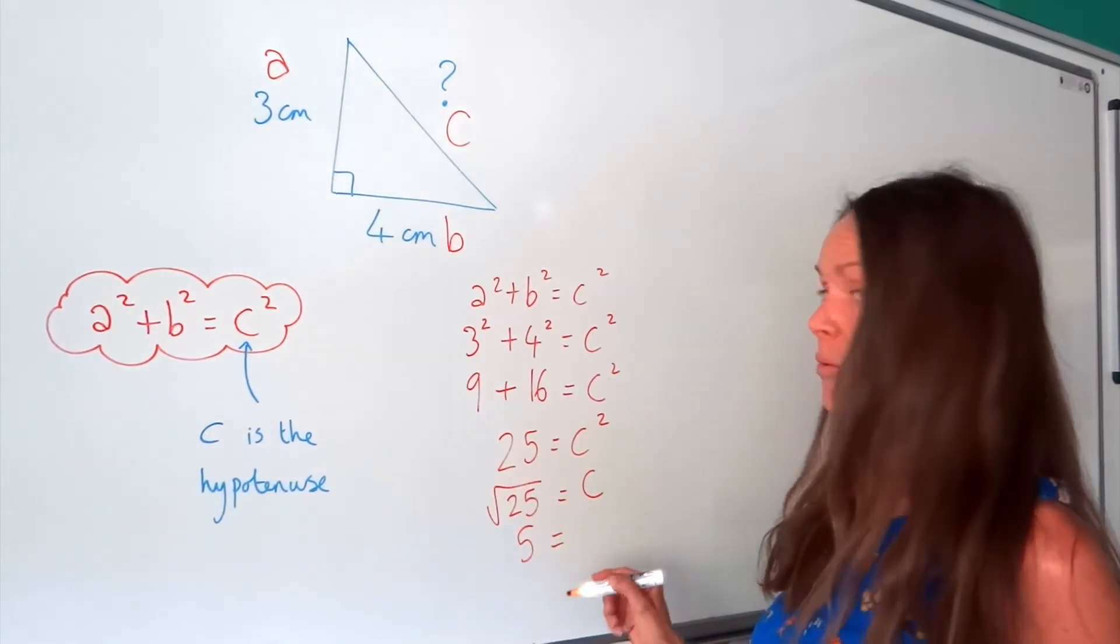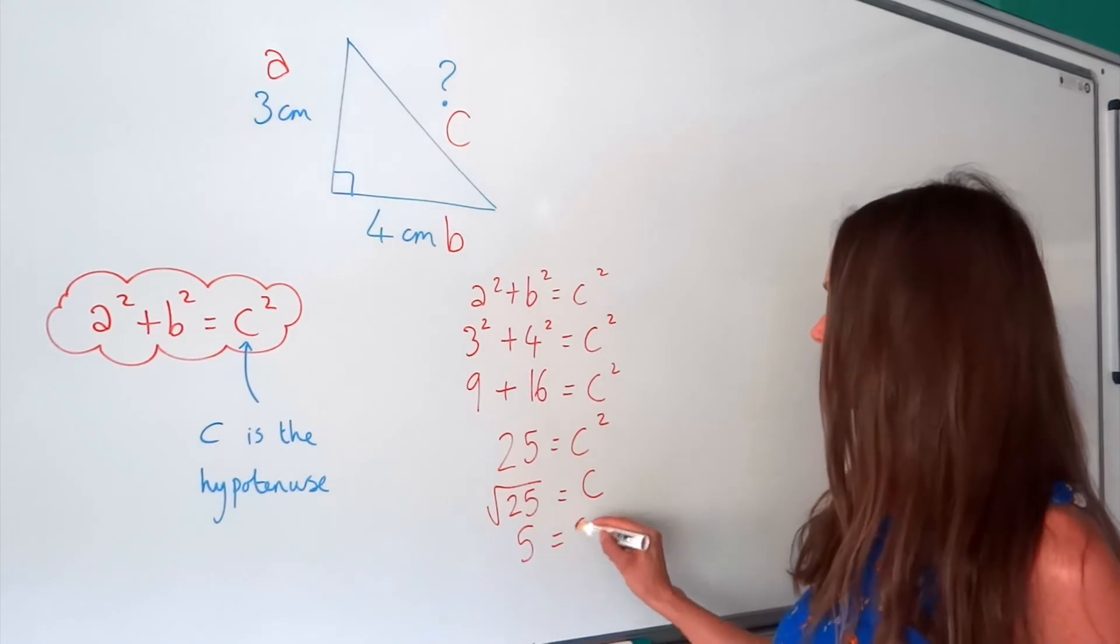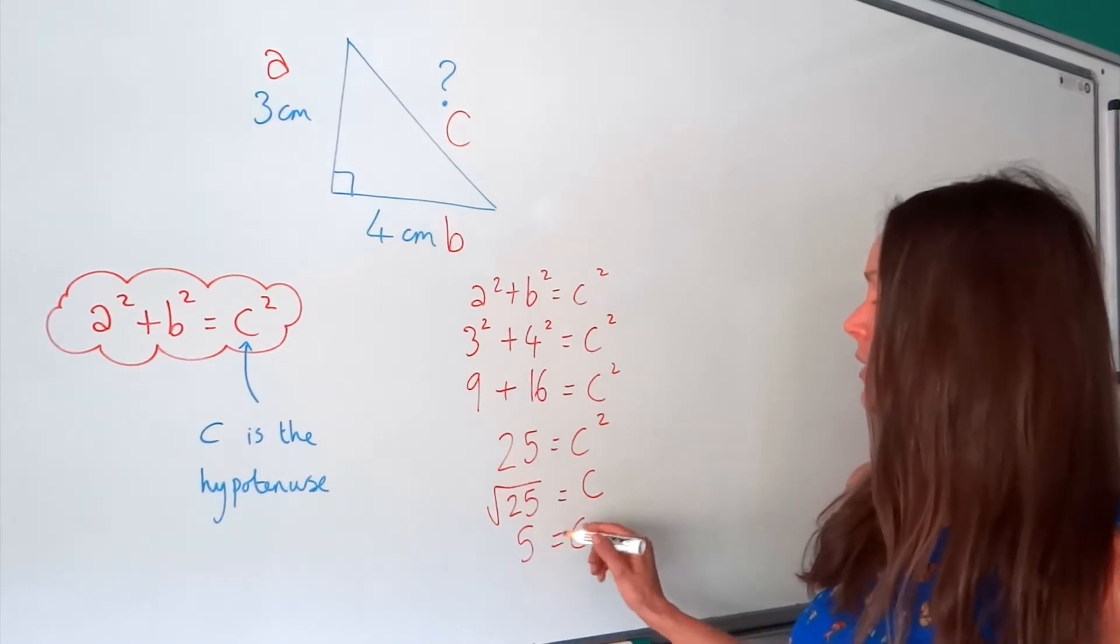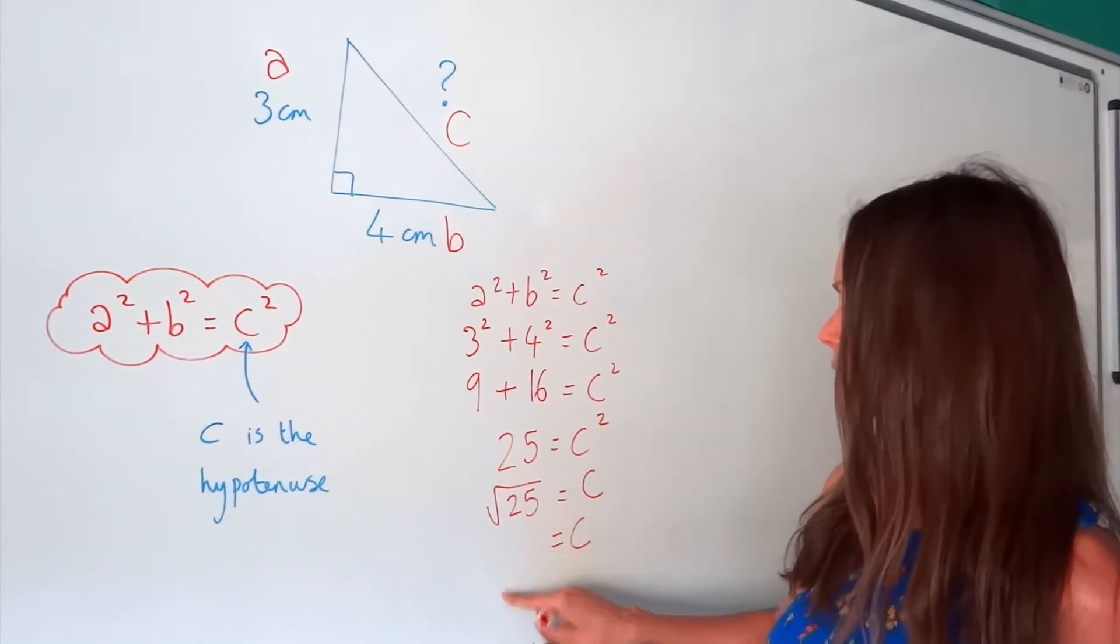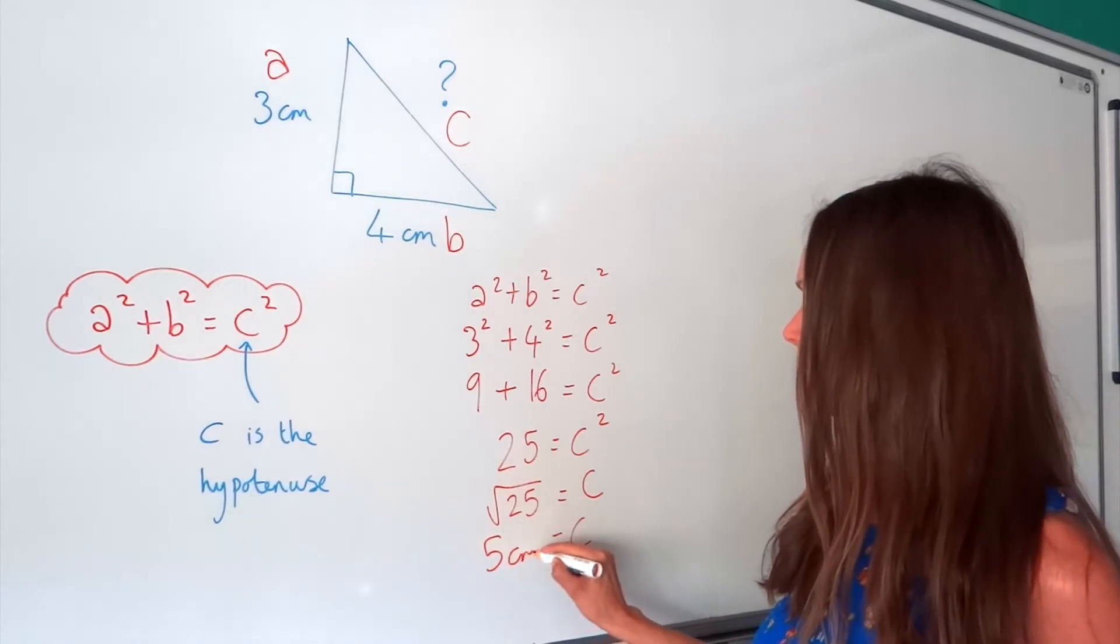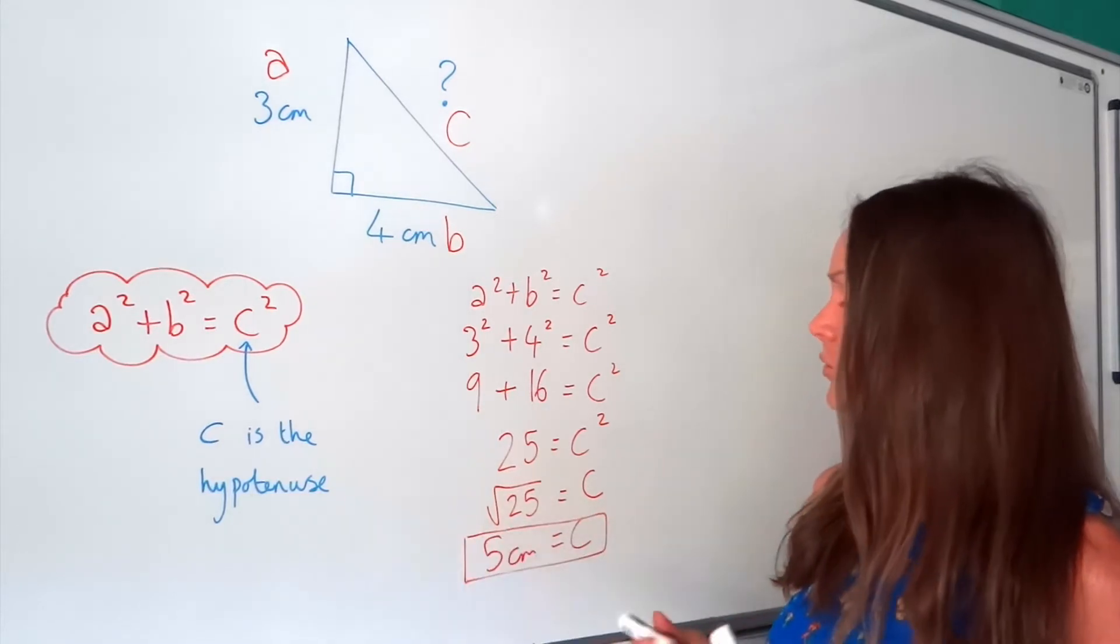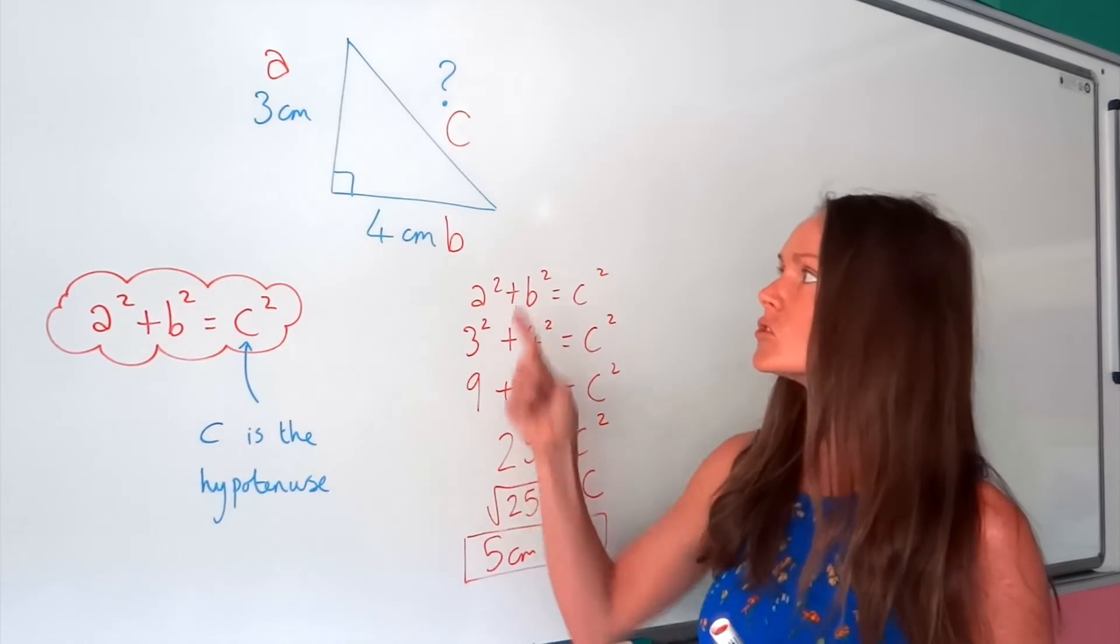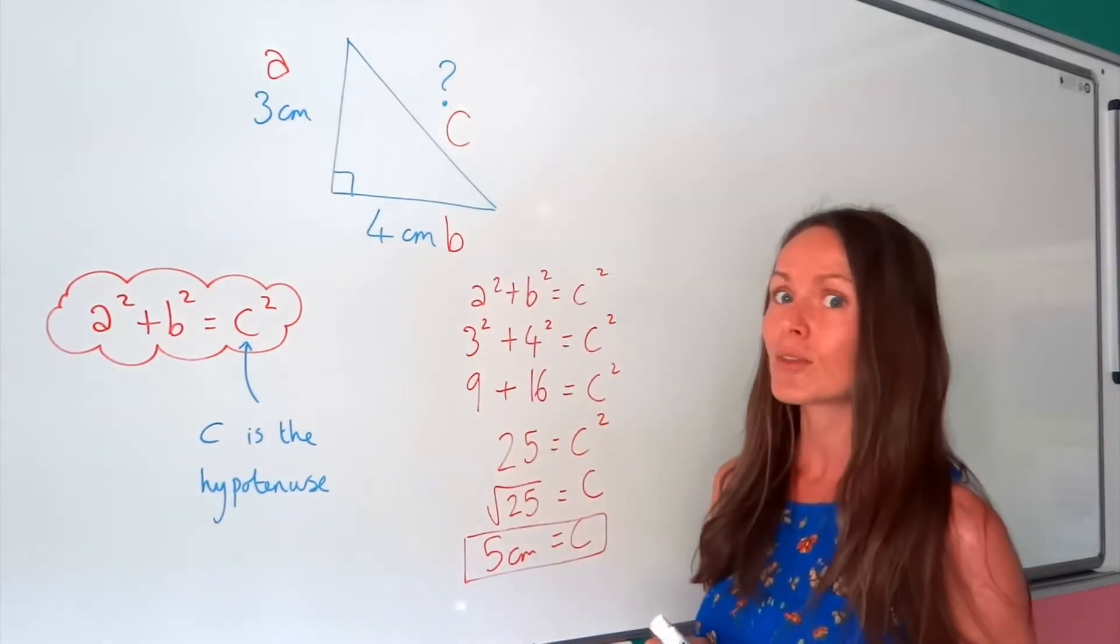Well, the square root of 25 is 5. Because 5 squared, 5 times 5, is 25. So remember the units, I'm just going to move that over there. So c is 5 centimetres. So we've calculated the hypotenuse of that right-angled triangle there.